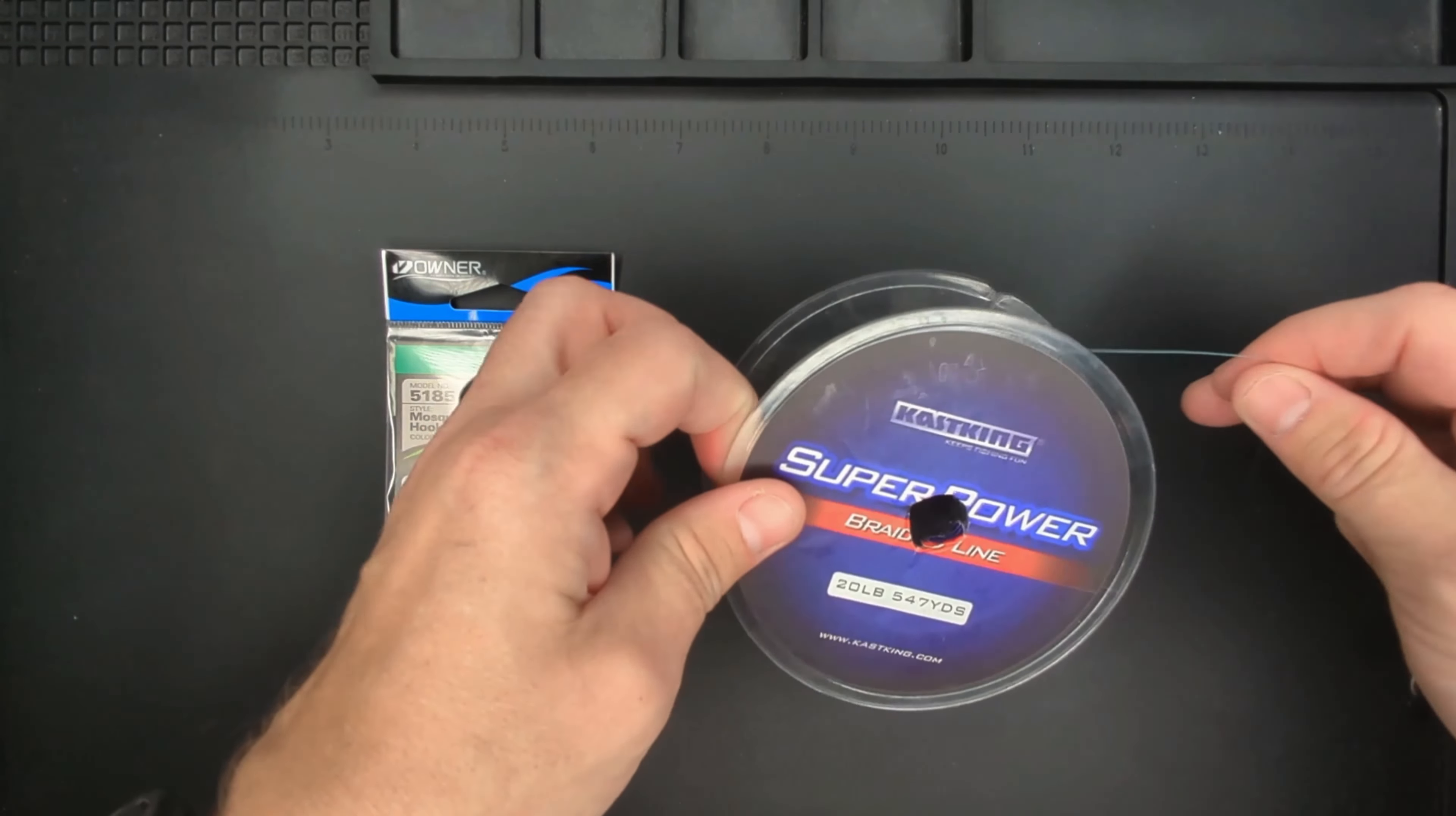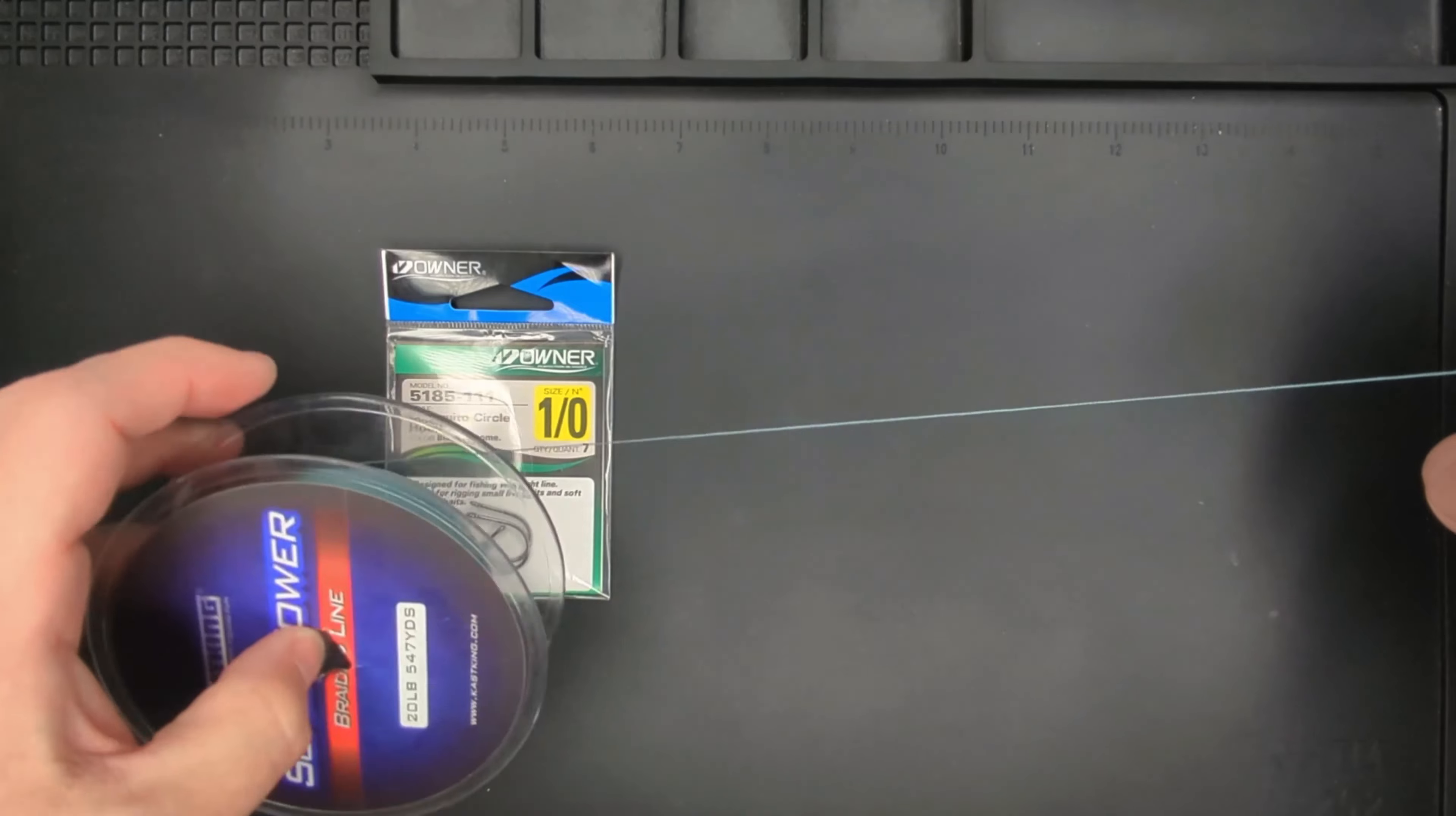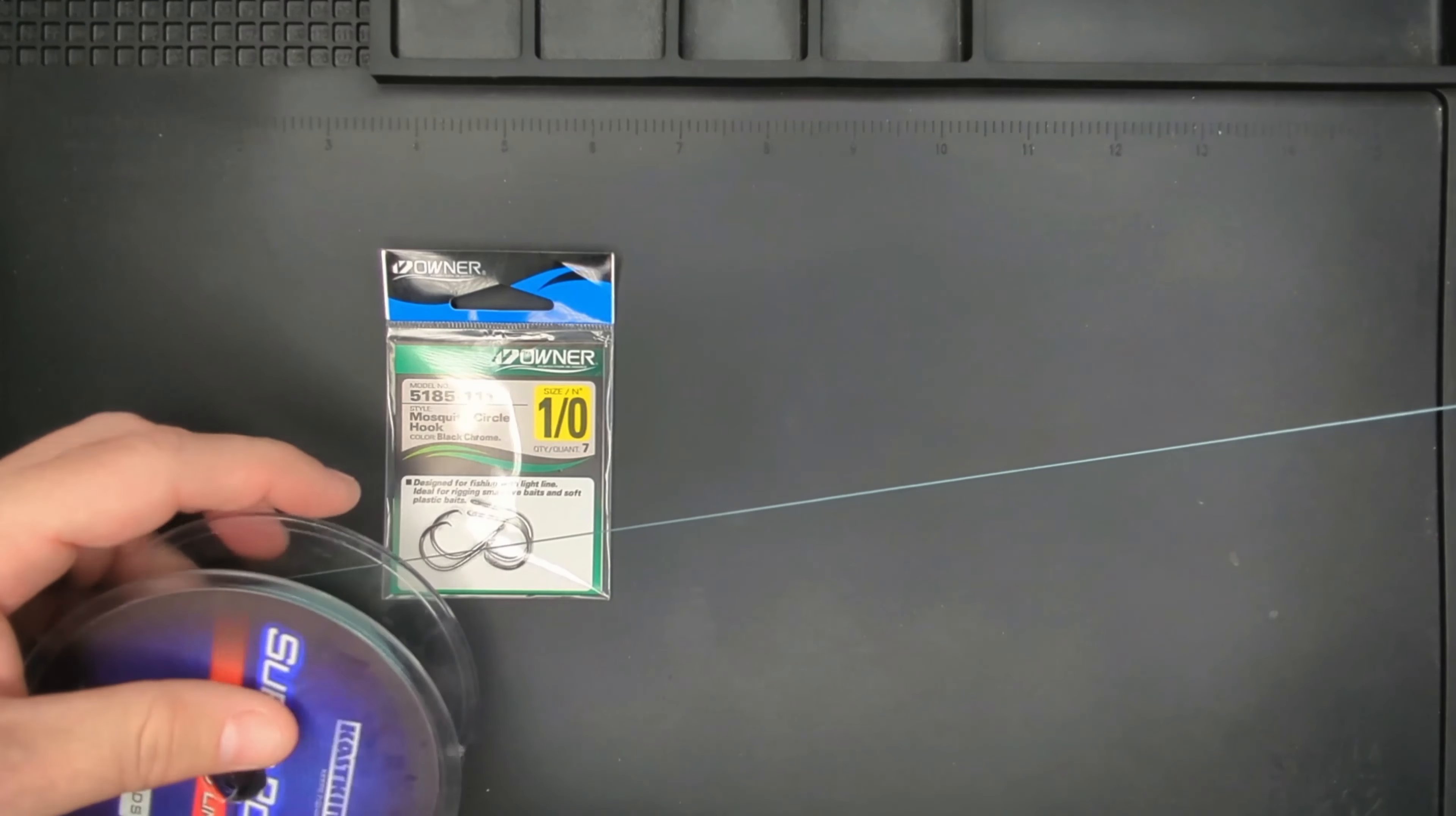First thing you're going to want to do is take approximately 12 to 18 inches of braid and cut that off. That's going to be the basis for our hair rig.